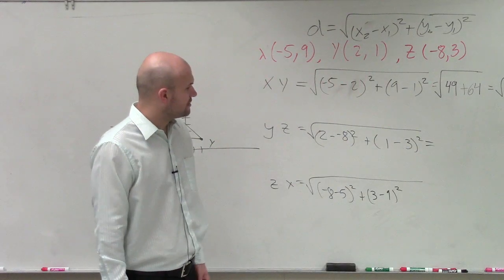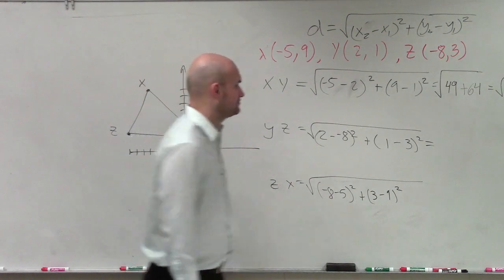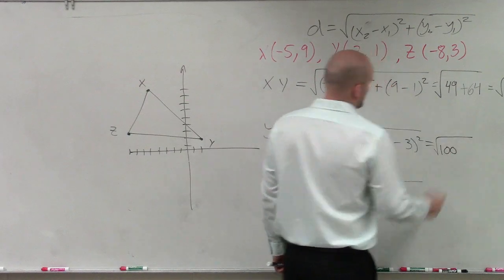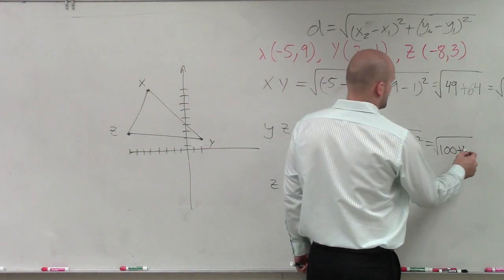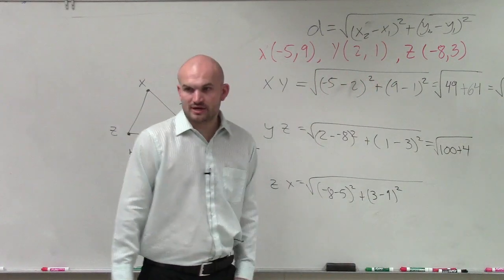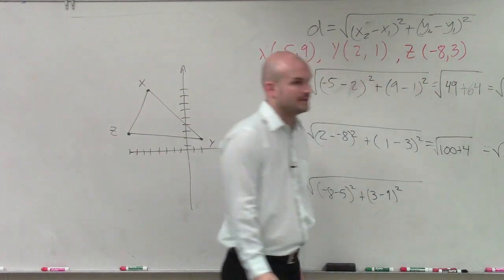Let's go to the next one. 2 minus 8, or 2 minus a negative 8 is 10. 10 squared is 100. 1 minus 3 is negative 2. Negative 2 squared is 4. So 100 plus 4 is 104.